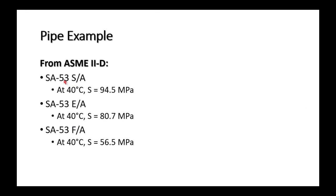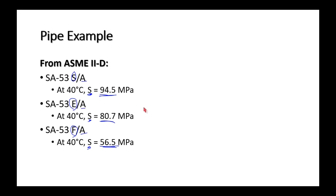To summarize — comparing seamless, ERW, and Type F furnace butt weld, all Grade A, SA-53 pipe at 40°C: the allowable working stress for seamless is 94.5 MPa, for ERW it's 80.7 MPa, and for furnace butt weld it's 56.5 MPa. To find the joint efficiency: 80.7 ÷ 94.5, and 56.5 ÷ 94.5.